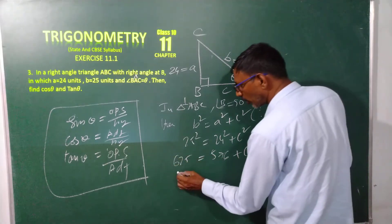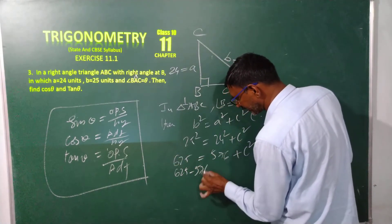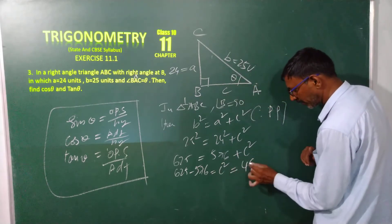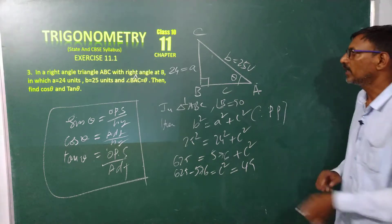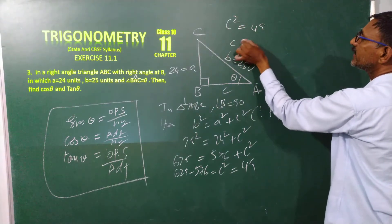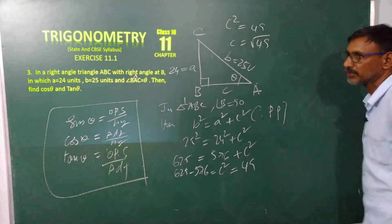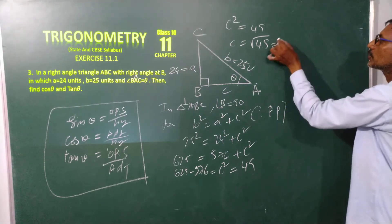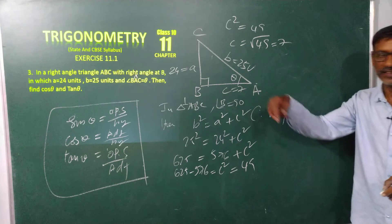Here, 576 will go to that side. 625 minus 576 is equal to c square. This is nothing but 49. You subtract it, we get 49 only. c square is equal to 49. Then c is equal to square root of 49. We know that if you remove the square, you can keep square root of 49. That is equal to 7. Yes, now I have 7. My c value is 7.